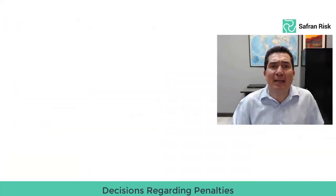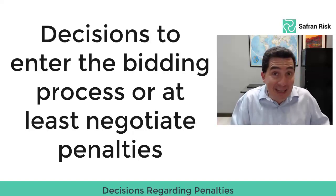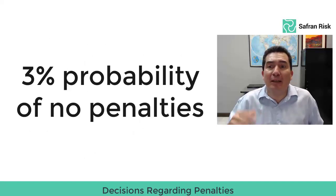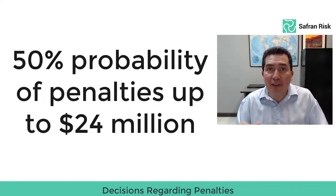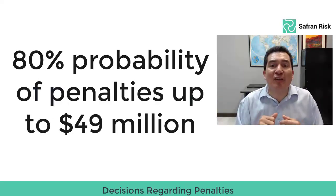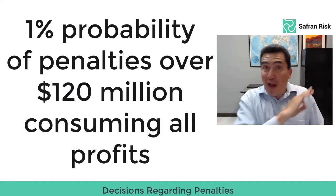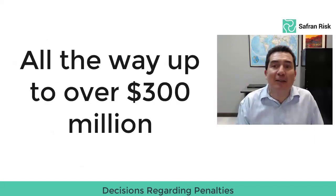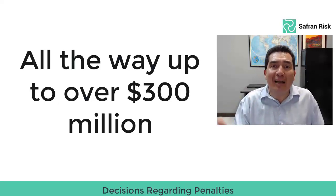With these elements in mind, directors can take a look at the decision to enter the bidding process, or at least try to negotiate penalty clauses. There's only a 3% probability that there will be no penalties; a 50% probability of penalties up to $24 million; an 80% probability of penalties up to $49 million; and a 1% probability of penalties over $120 million — expected total revenue — all the way up to an extreme position of over $300 million in penalties.